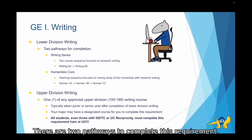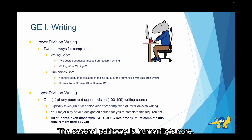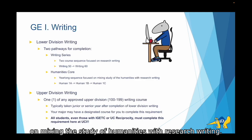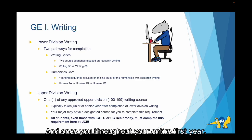There are two pathways to complete this requirement: the Writing Series and Humanities Core. The Writing Series is a two-course sequence focused on research writing, and it's composed of Writing 50 and Writing 60. The second pathway is Humanities Core, which is a year-long sequence focused on mixing the study of humanities with research writing. If you choose to take the sequence, you would take Humanities Core 1A, 1B, and 1C throughout your entire first year.